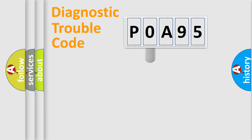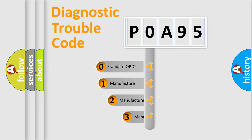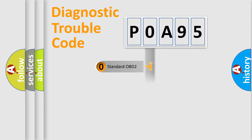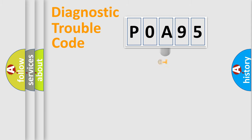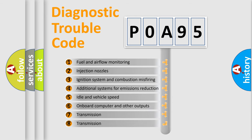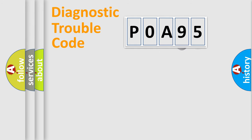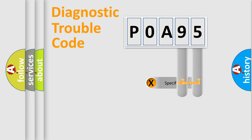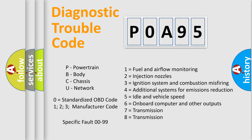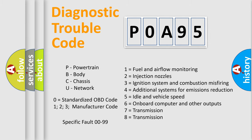This distribution is defined in the first character of the code. If the second character is expressed as zero, it is a standardized error. In the case of numbers 1, 2, or 3, it is a manufacturer-specific error. The third character specifies a subset of errors. This distribution is valid only for the standardized DTC code, and only the last two characters define the specific fault of the group.